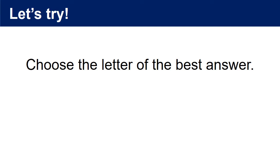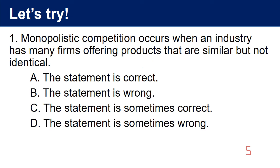Before we proceed to our discussion, let us try to answer the following questions. 1. Monopolistic competition occurs when an industry has many firms offering products that are similar but not identical. A. The statement is correct. B. The statement is wrong. C. The statement is sometimes correct. D. The statement is sometimes wrong.